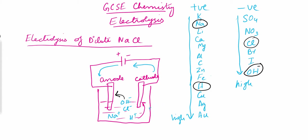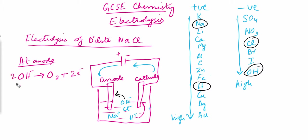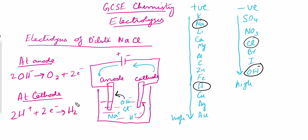The reaction equations are as follows. At the anode, the hydroxide ion goes to the anode, producing oxygen gas and giving off two electrons. At the cathode, the hydrogen ion deposits at the cathode, accepts two electrons, and forms hydrogen gas. So we get hydrogen gas at the cathode and oxygen gas at the anode.